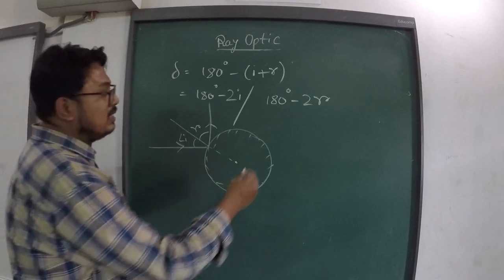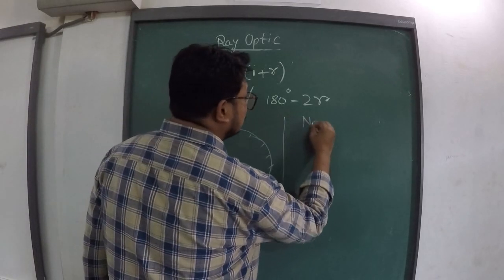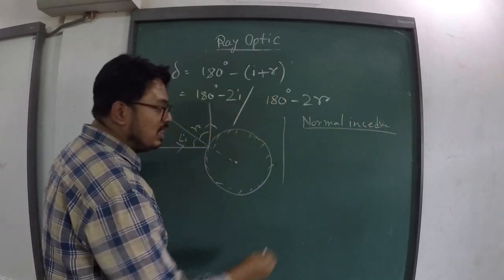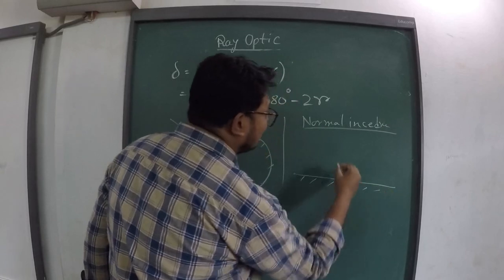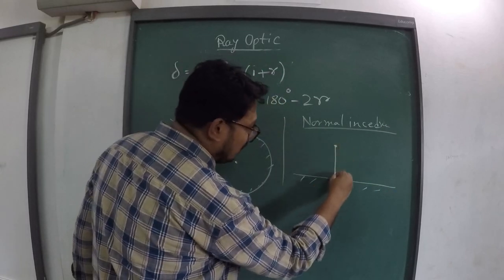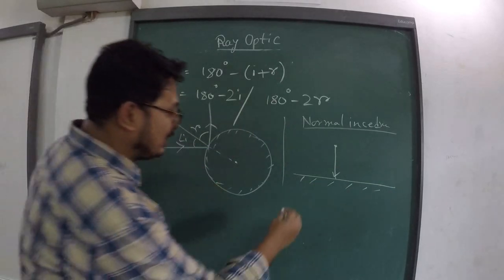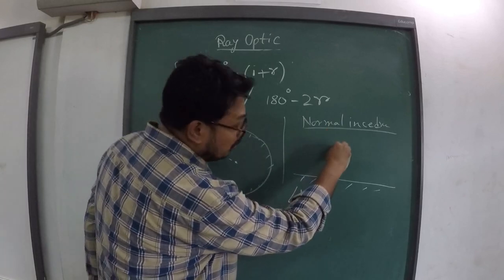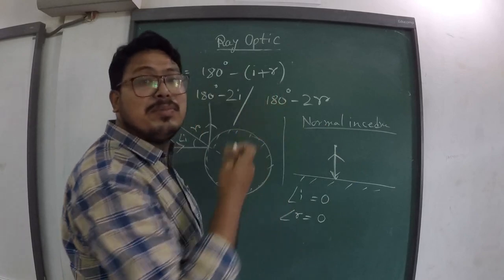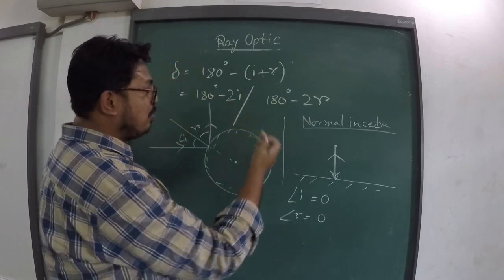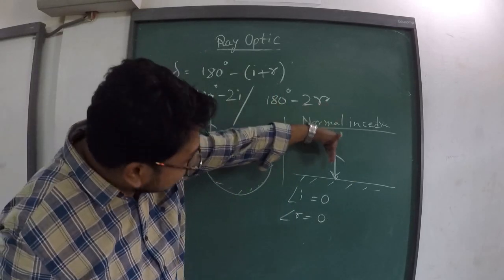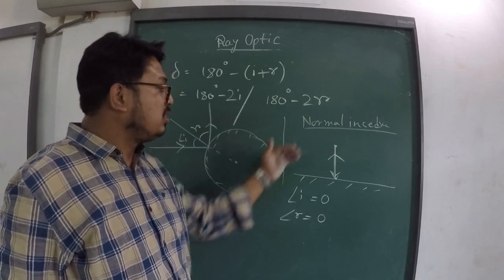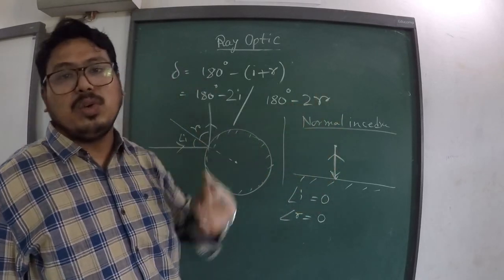The next topic is normal incidence. What do we mean by normal incidence? If the ray falls on a surface normally — perpendicular to it — the angle of incidence becomes zero and the angle of reflection also becomes zero. So the ray will reflect back along the same path it came from.